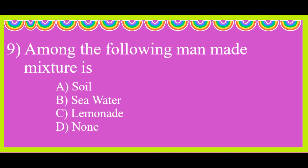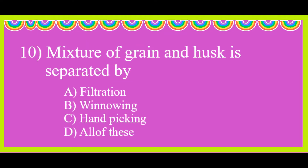Among the following, the man-made mixture is lemonade. Mixture of grain and husk is separated by winnowing.